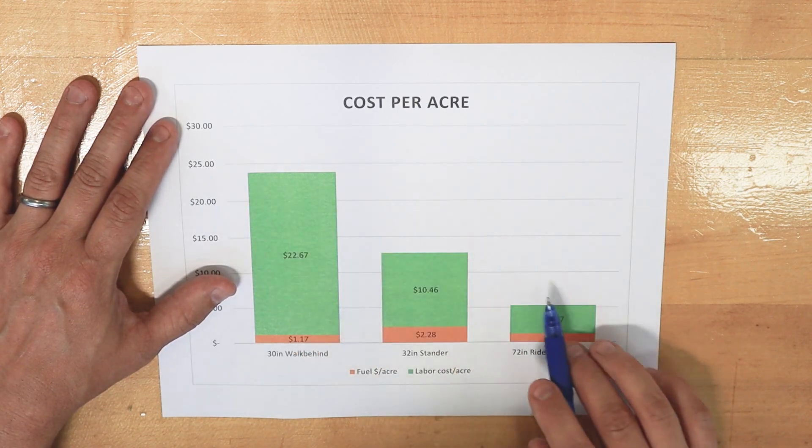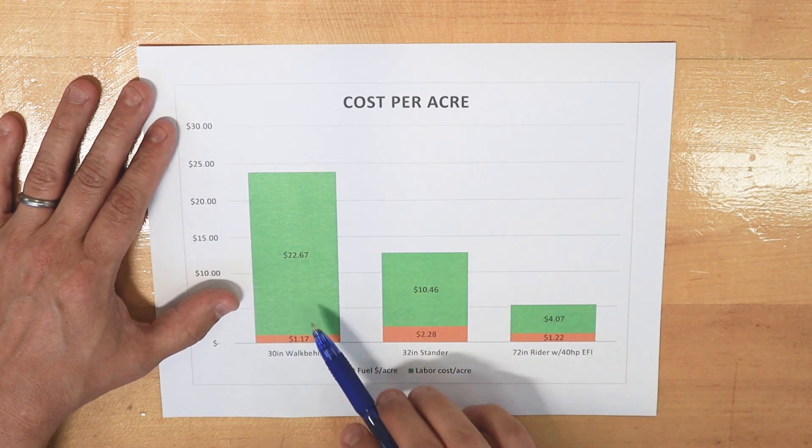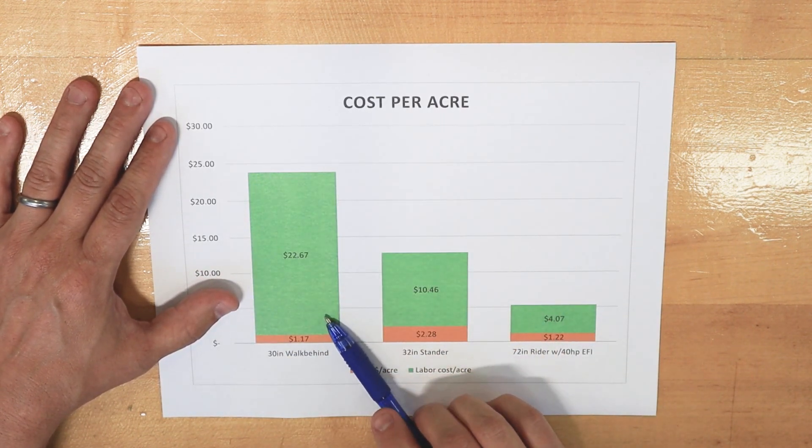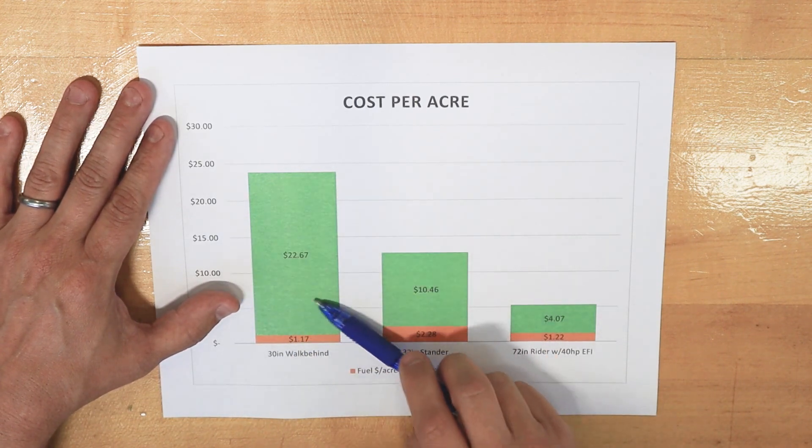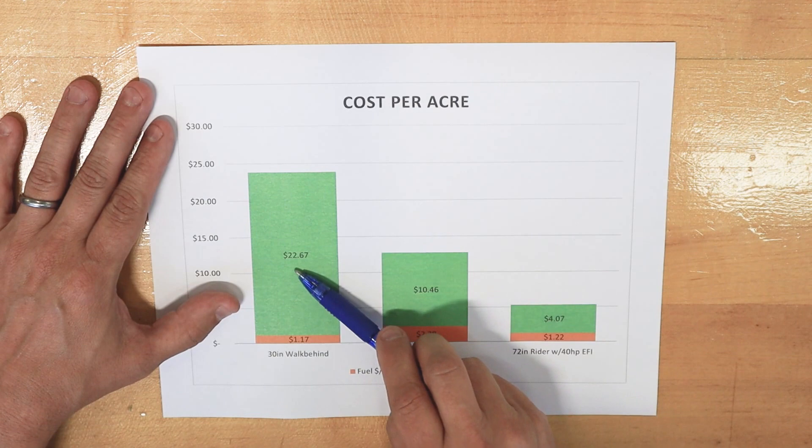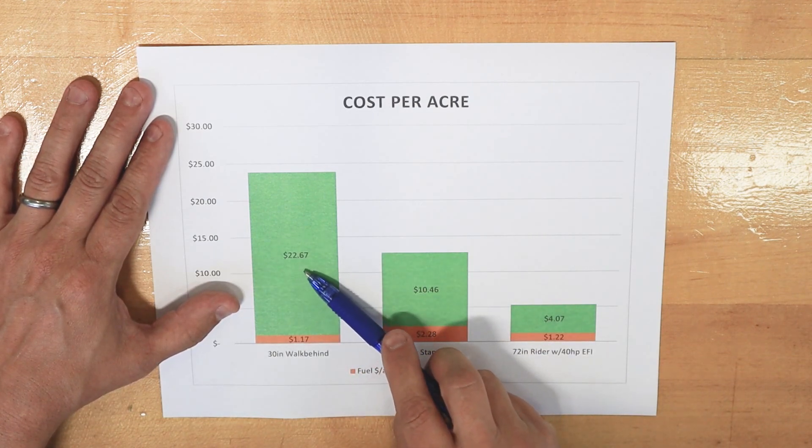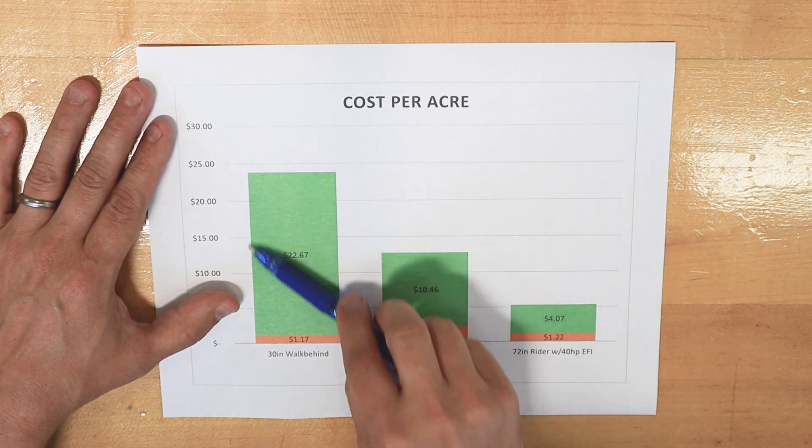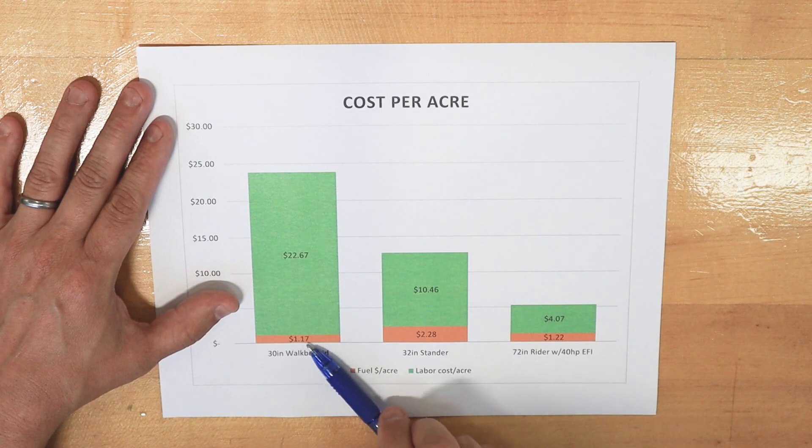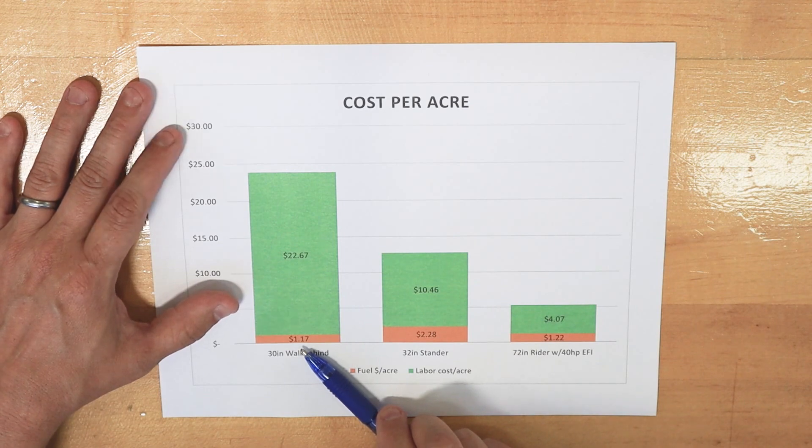Now, as we did this test, you can see here that this walk-behind has a really large labor component. We were cutting somewhat briskly with this machine, but its production rate would have taken a little bit more than an hour to cut an acre. And so you have this very large labor expense, and we were about $1.17 in terms of fuel cost per acre.